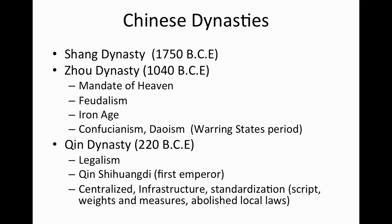The Zhou Dynasty is the first where you'll see more historical information. Around 1040 BCE, the mandate of heaven is introduced. It's the first feudal society and the Iron Age, where the Chinese start to implement iron tools and weapons. That's also where we see the birth of Confucianism and Taoism, which developed in response to the chaos and conflict of the warring states period.